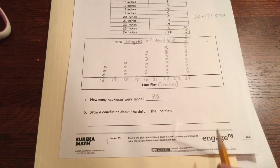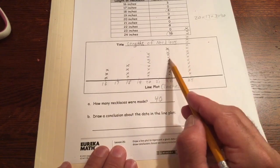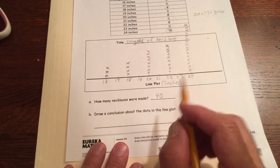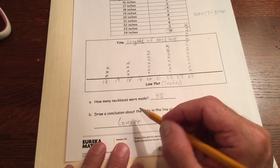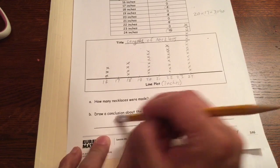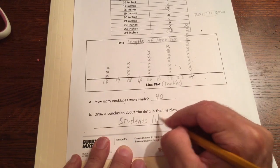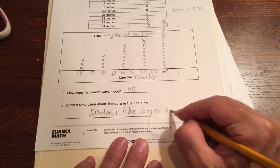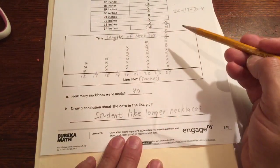And I make a conclusion about the data in this line plot. It looks like longer necklaces are more popular, because the longer they get, the more students are making them. So I'm going to say students like longer necklaces, because the longer the lengths are, the more kids make them. That's our first page.